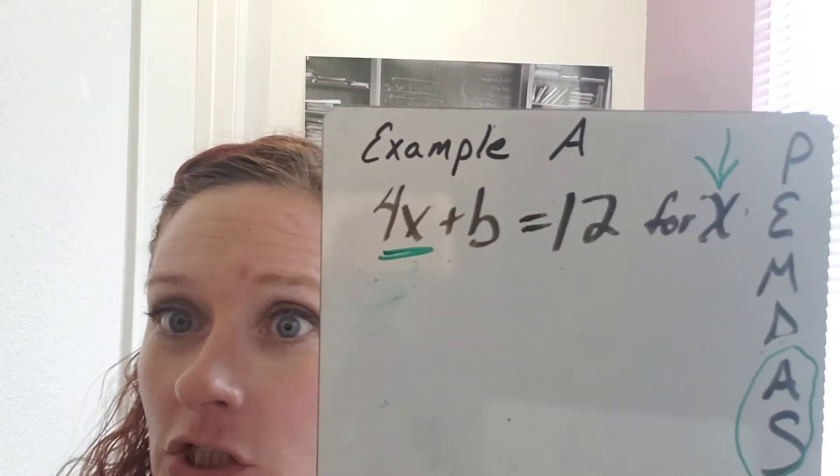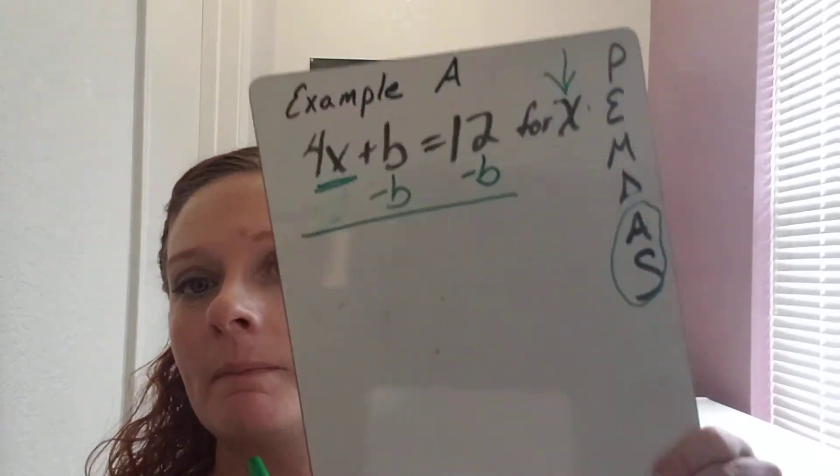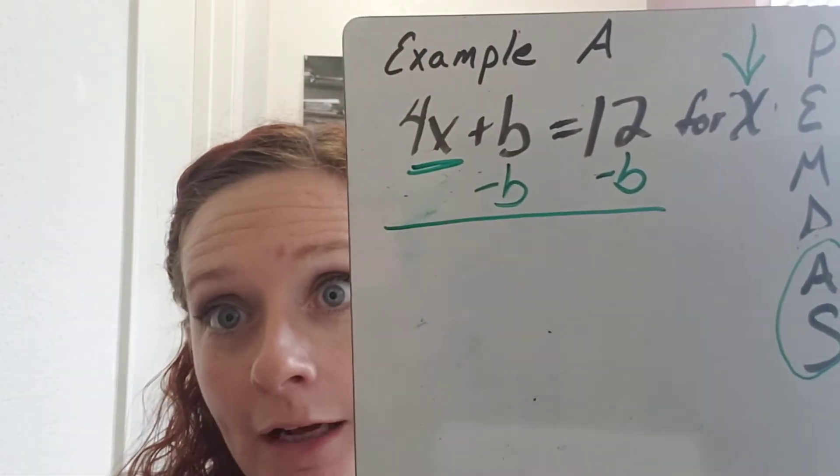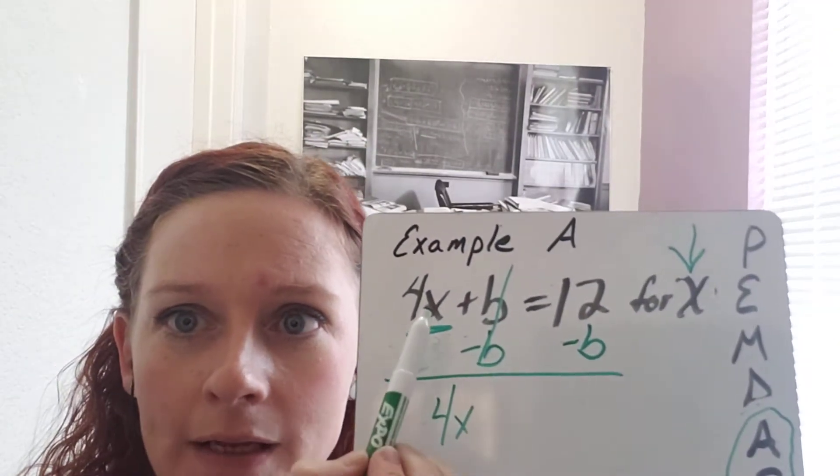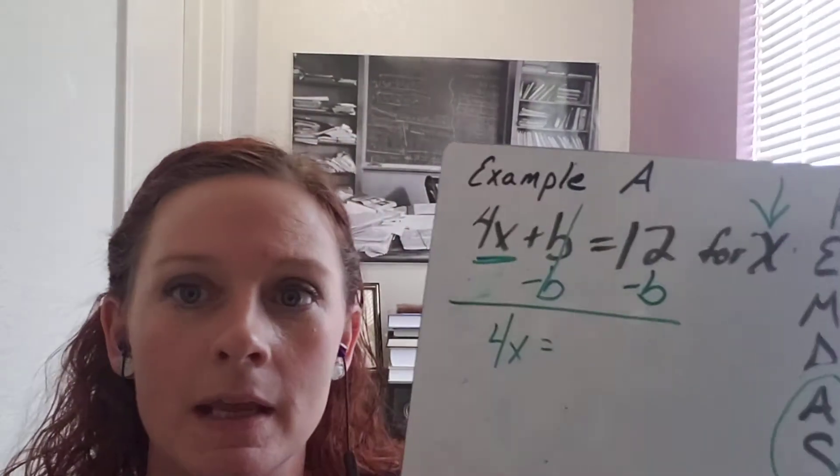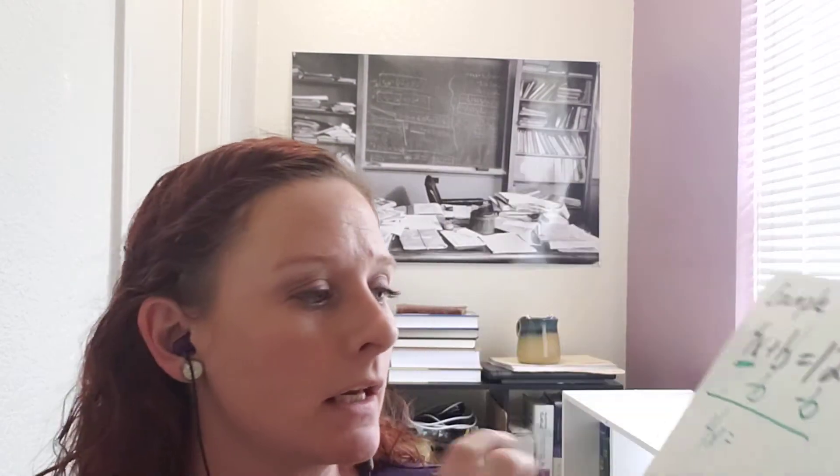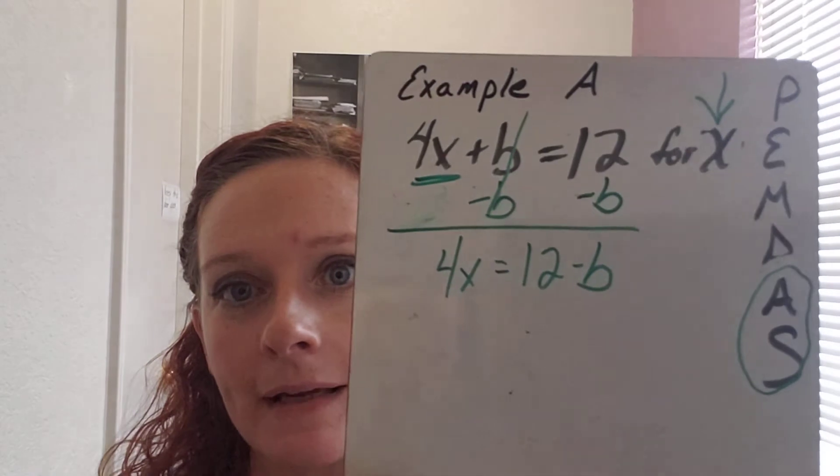What is the opposite of addition? That's right, subtraction. We're going to subtract the B from both sides. We have to subtract the B from both sides because that's what you do in algebra. That means on this side, the Bs are going to cancel out and you're left with 4X. Drop your equal sign and then watch this very closely. 12 minus B.